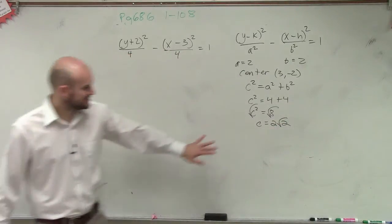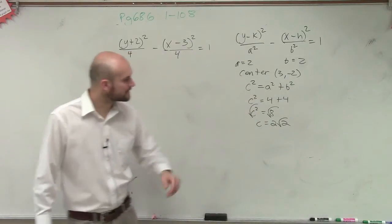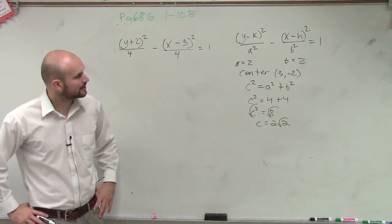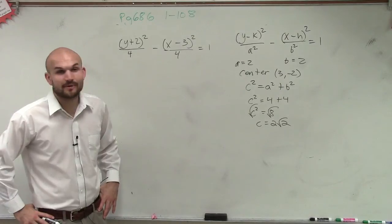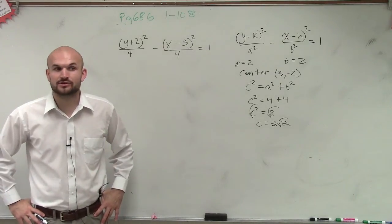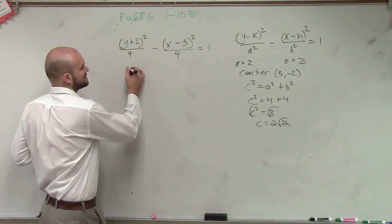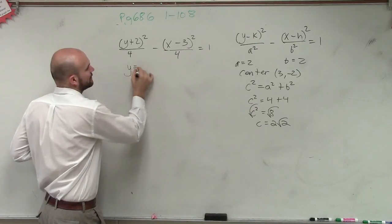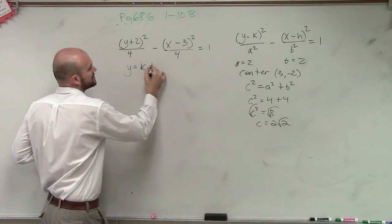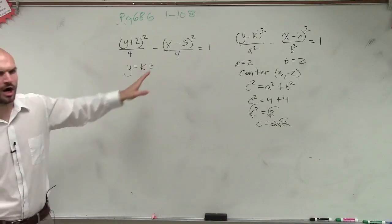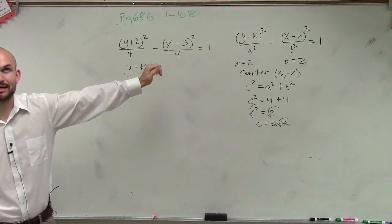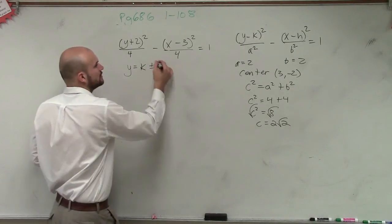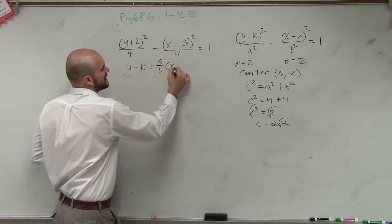So we now know what c is. So we have c equals 2 radical 2, a, b. And we now need to figure out the asymptotes. So it's vertical, so remember, asymptotes look like this: y equals k plus or minus our a, which is a over b, so it's a over b times x minus h.